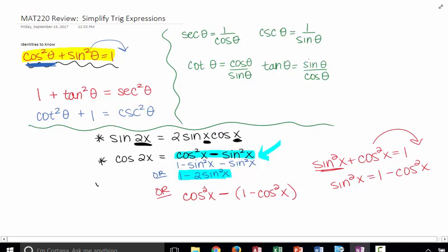And so then, I'll distribute my negative, so that will make that a positive cosine squared x plus a positive cosine squared x would be 2 cosine squared x, and then minus 1. And so, I can actually write cosine of 2x three ways, although I really only recognize or know or memorize this first.